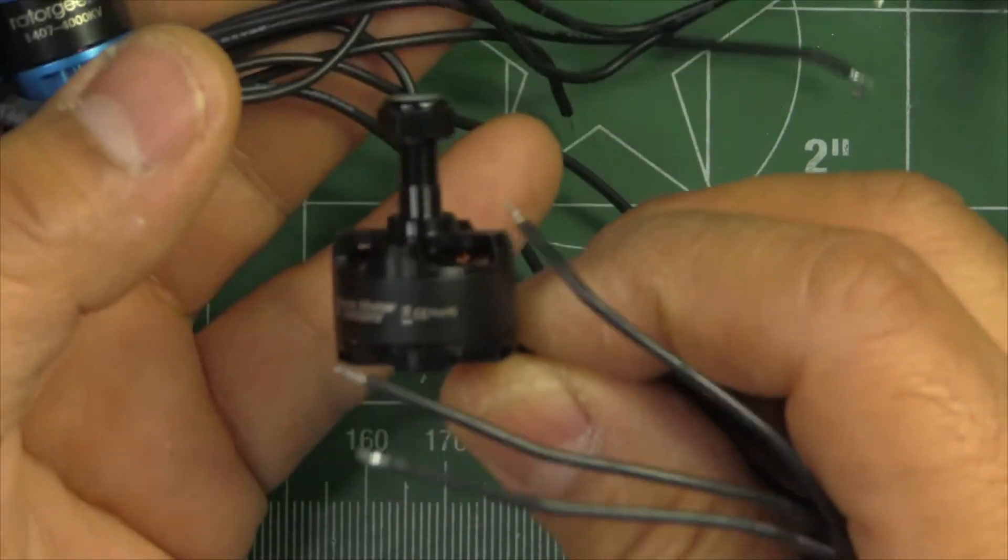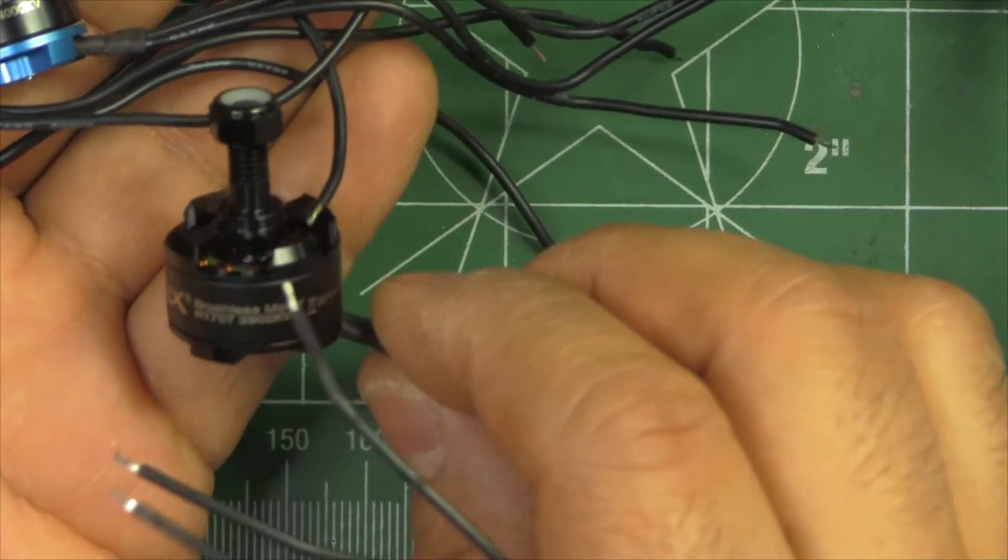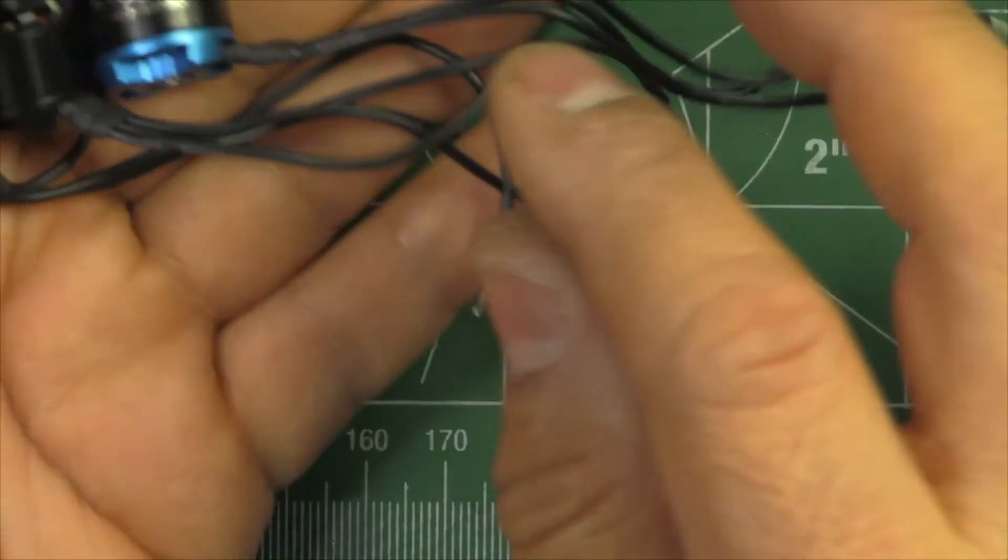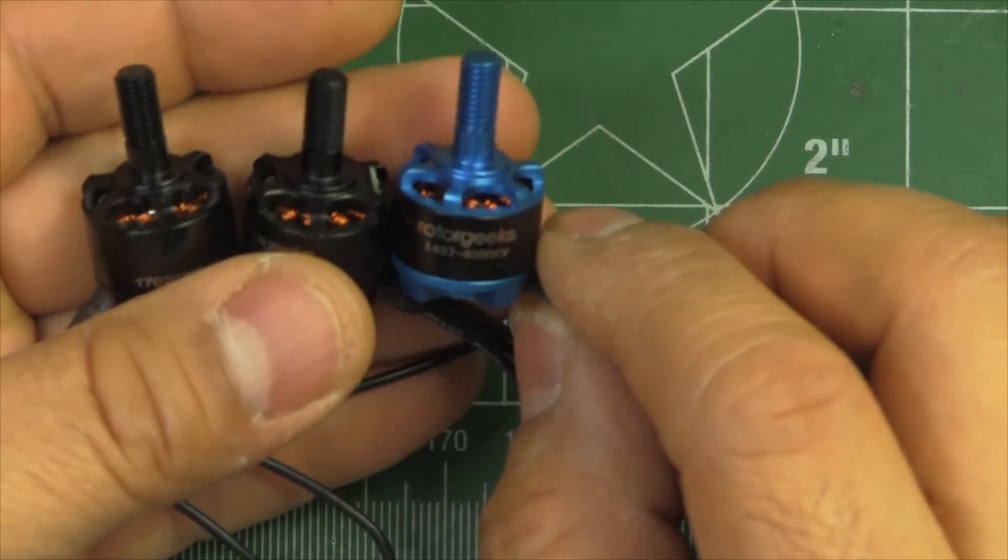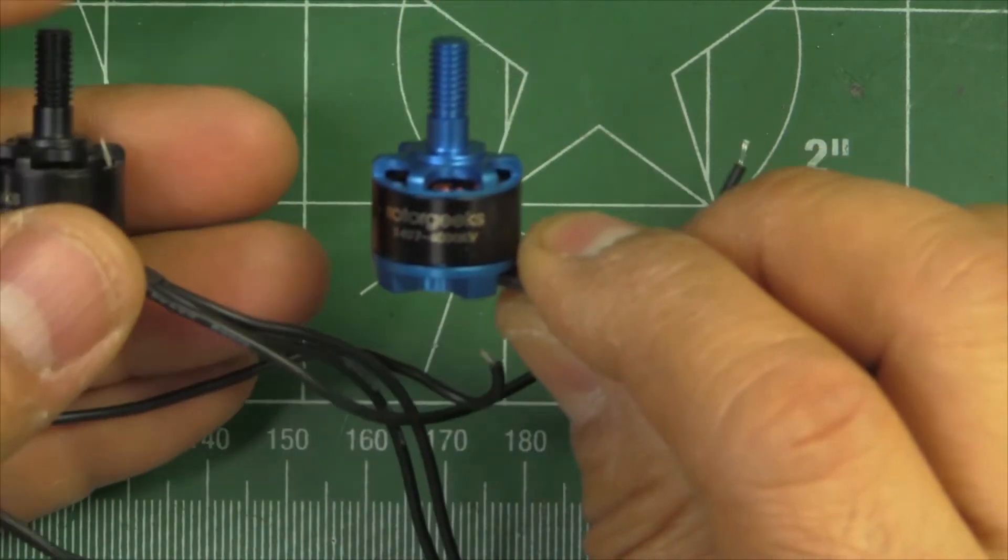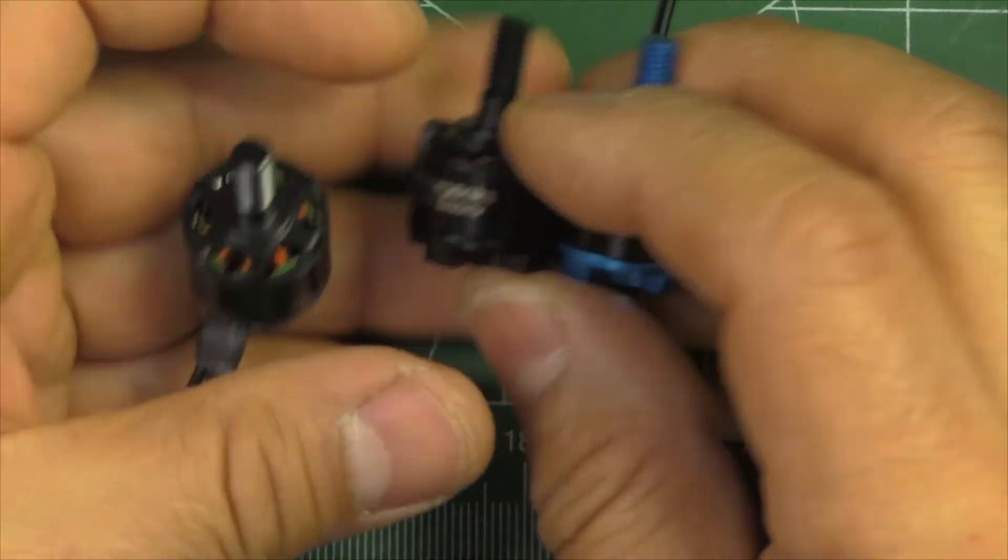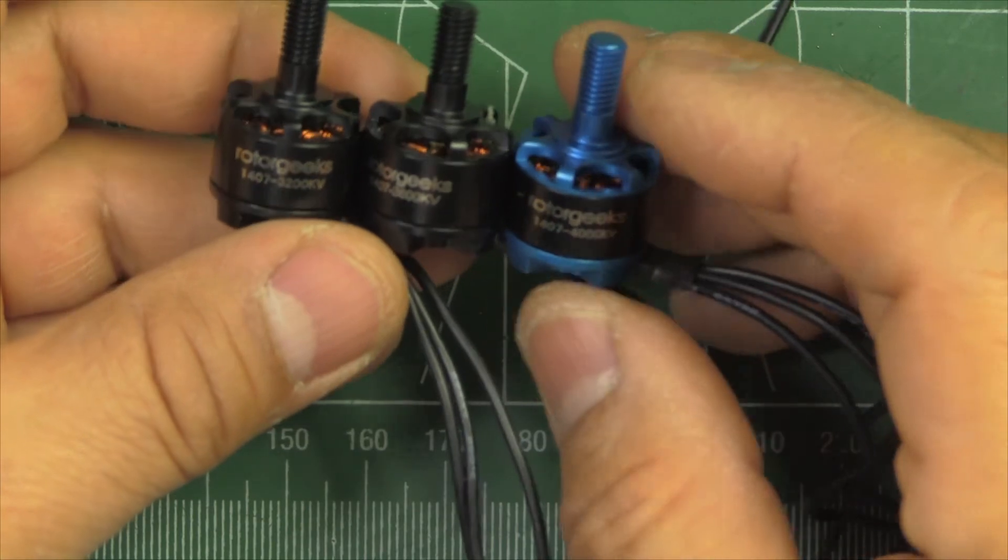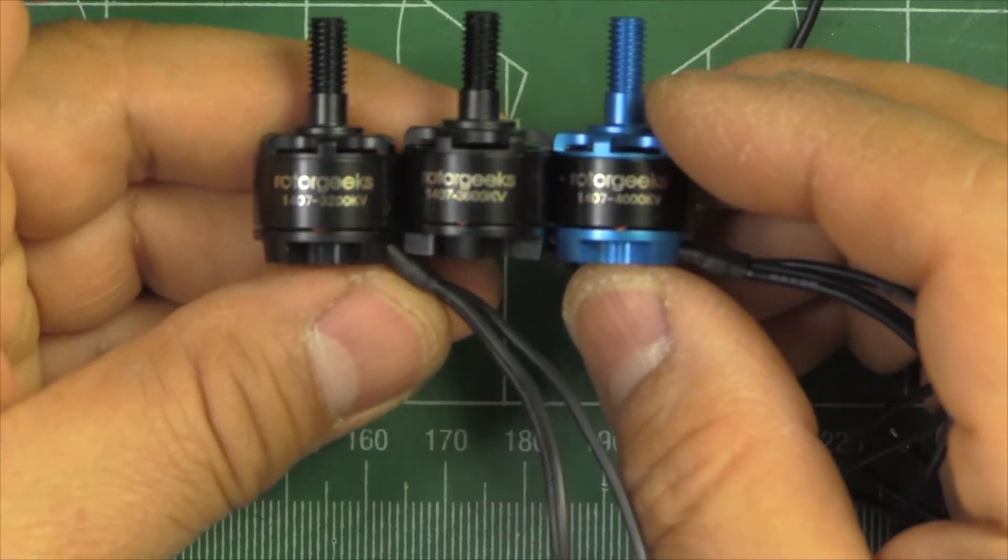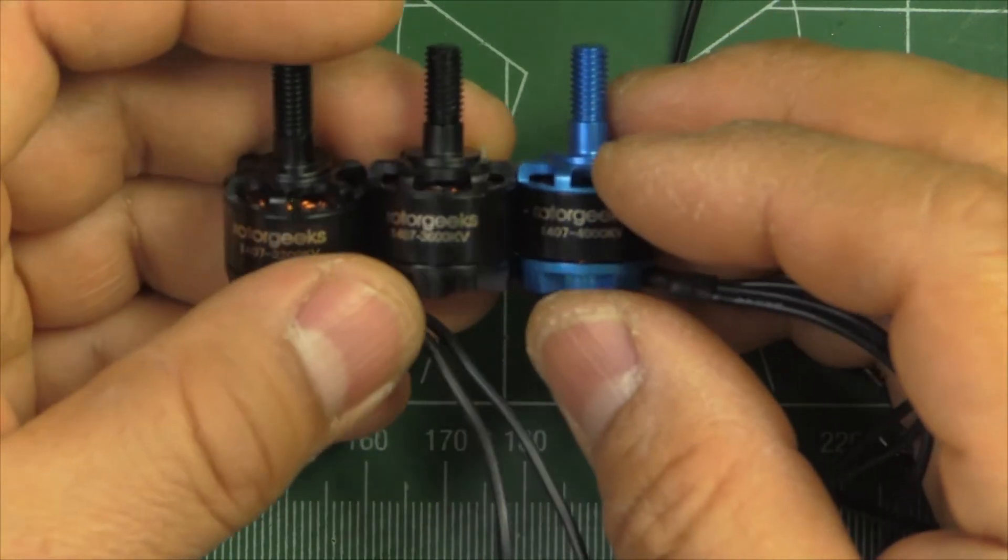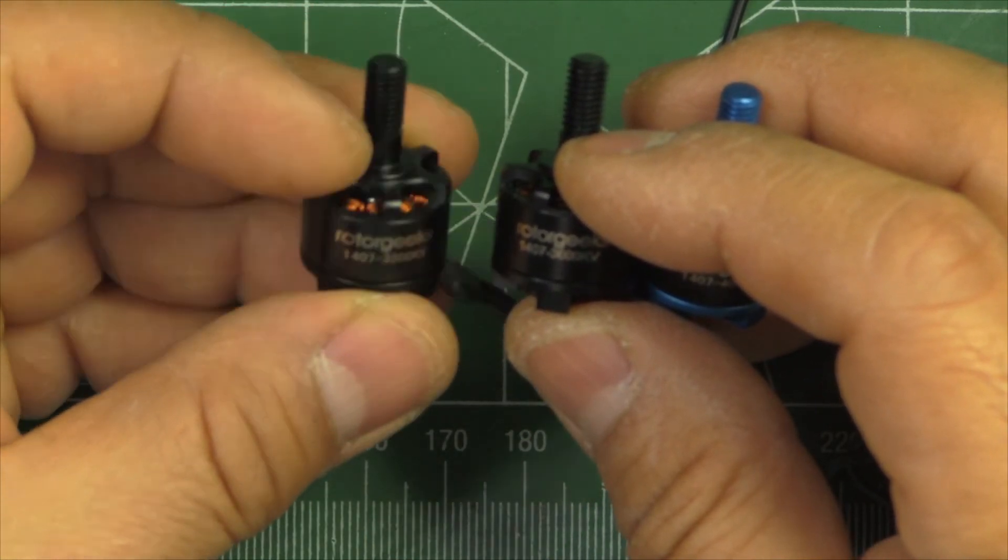And this one I think has been available for a while. They also sent this: a 1707 3900 KV. And RotorGeeks also sent me these three motors for testing: 1407 4000 KV, 1407 3600 KV, and 1407 3200 KV. So it looks like RotorGeeks has the whole 1407 range covered, which is pretty good. The 3200 should be a good mellow type of motor with a little bit more torque